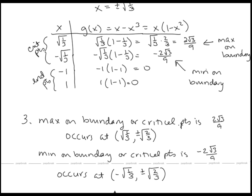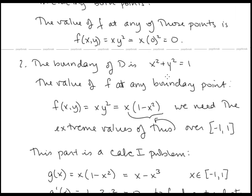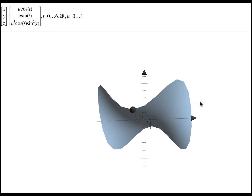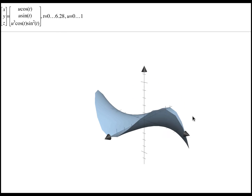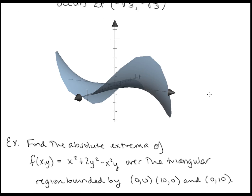The maximum of 2√3/9 occurs when x = +√(1/3). The corresponding y values come from y² = 1 − x², giving y = ±√(2/3). Similarly, the minimum of −2√3/9 occurs at x = −√(1/3) with y = ±√(2/3). Here is the surface defined over the unit disk — we can see two maximum points and two minimum points on the surface.